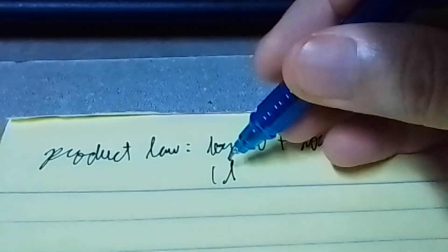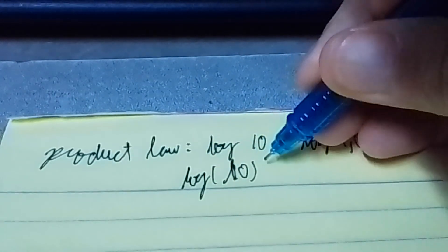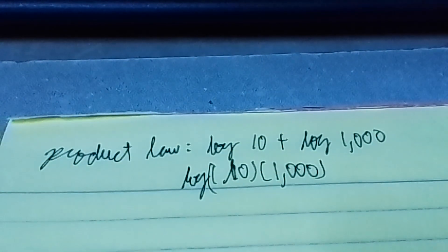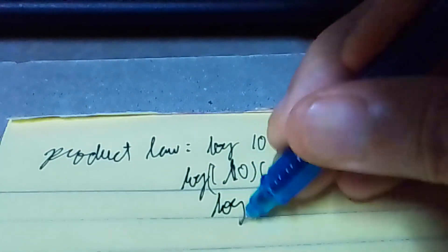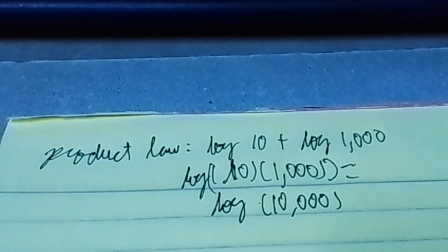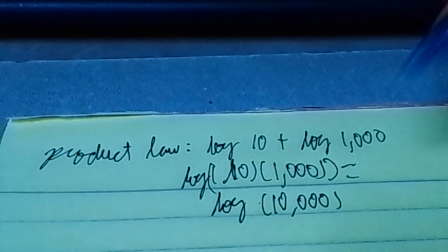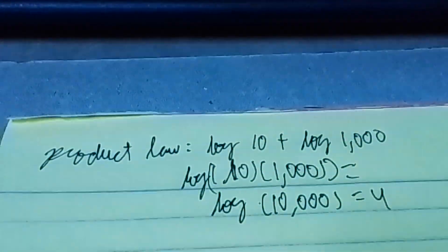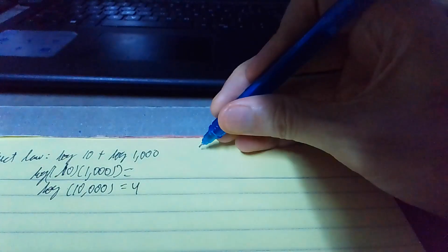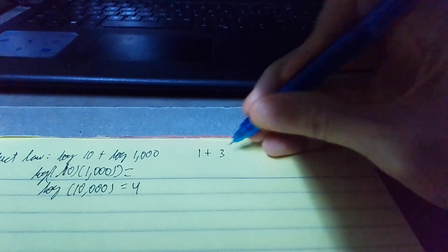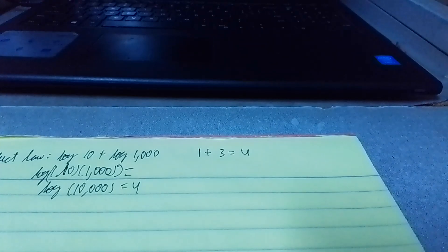Remember when we say, expand and condense logs using the property of logs. Remember, ito yung properties ng logs. Like for example, we have the product law. Ang product law, kapag sinasabi ng product law, like for example, you have log 10 plus log 1000. This can be written as log 10 times 1000, which simplifies to log 10,000. Pero ano yung log ng 10,000? Ang sagot dyan ay 4. Bilangin mo yung zeros.